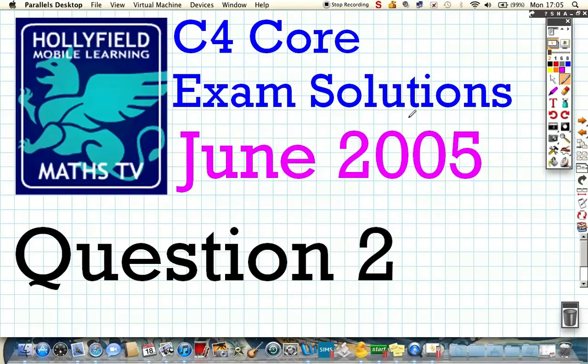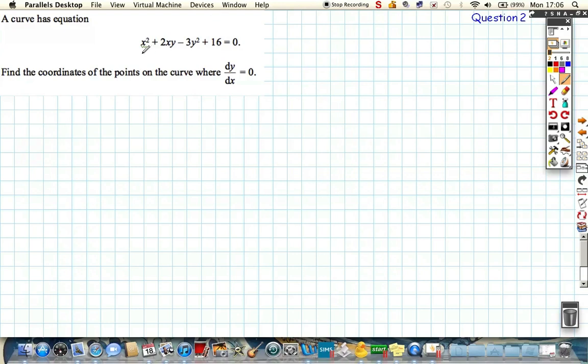So question 2 on the June 2005 paper. We're given the curve of the following equation, and we're asked to find the points on the curve where dy/dx equals 0.